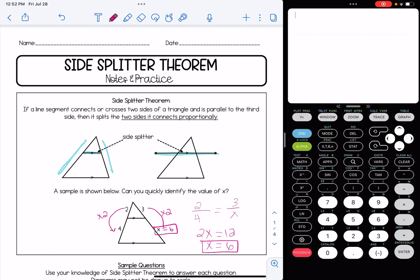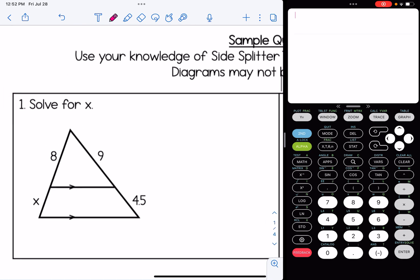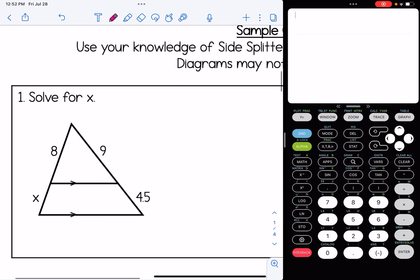Let's look at some sample questions. I'm going to be using my calculator on the right hand side so you can follow any work there too. Number one, solve for X. So we say we have a side splitter. 8 and X is going to be equal to 9, or 8 over X equals 9 over 4.5. We're going to cross multiply. When we do that, I'm going to get 9X equals 36, and that gives me that X is 4.